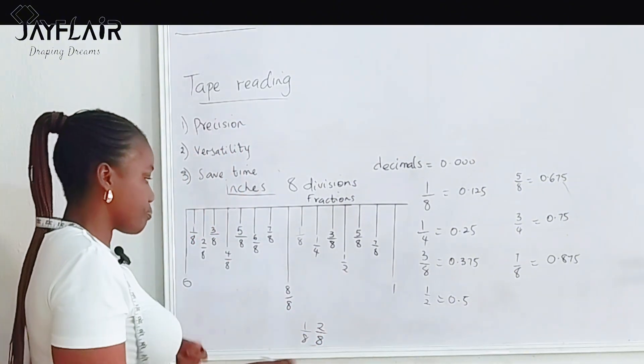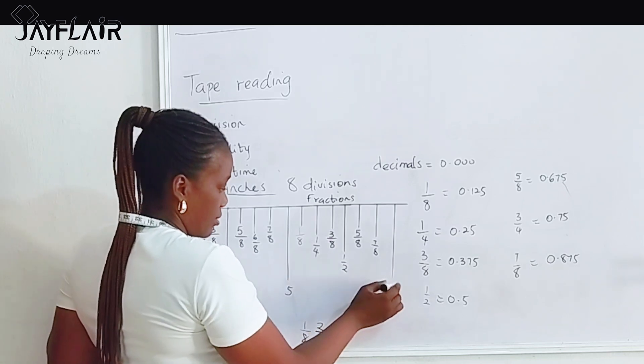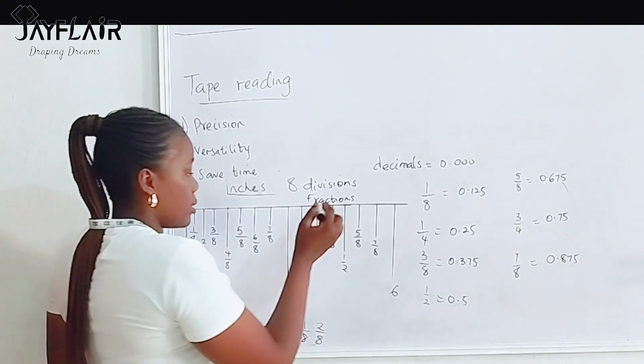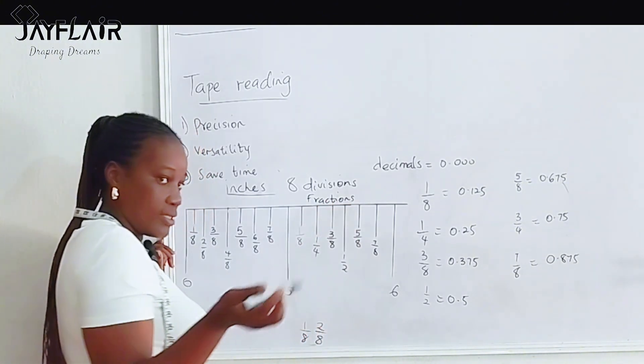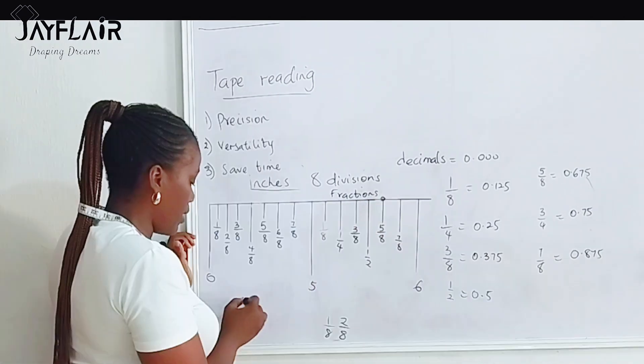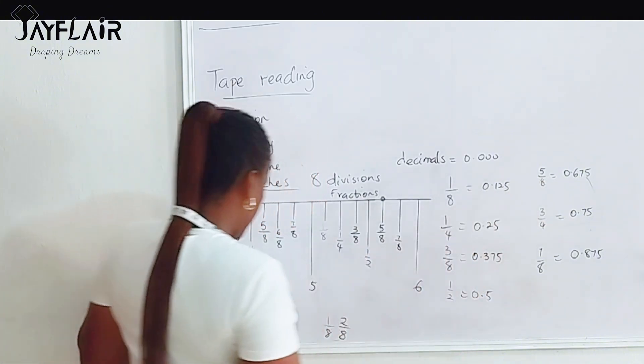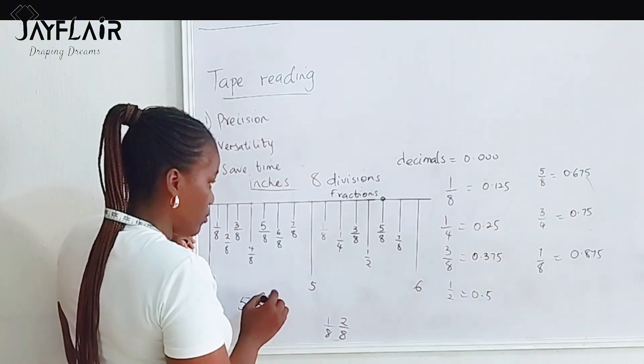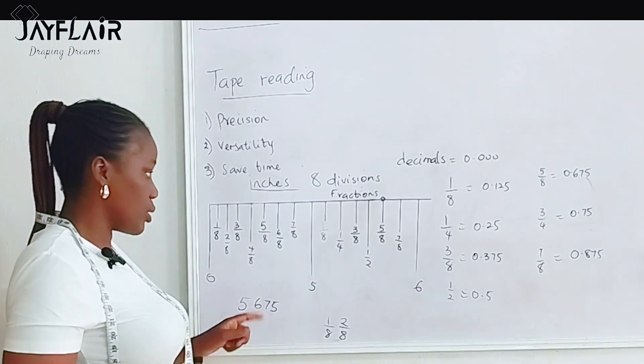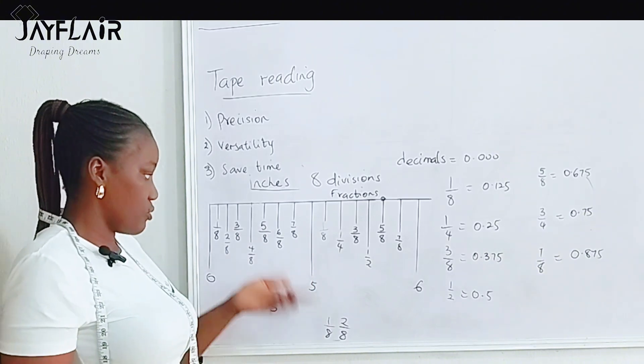For instance, let's say this is five and this is six. And then I measure somebody, and let's say I divided my calculator, I multiplied, and I got this answer: 5.675 on the calculator. This is what my calculator gave me. So how do I locate that on the tape when drafting pattern?